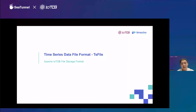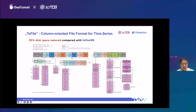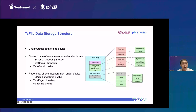The second part of this talk is about the time series data file format: TSFile. TSFile is a column-oriented file format for time series. We have experiments showing that TSFile reduces disk space by 85% compared with InfluxDB. The total structure looks like this: the first part is the data part and the second part is the index part. For the data part, there are different levels. The first level is the chunk group — a chunk group is data for one device, and within each chunk group we have different chunks.